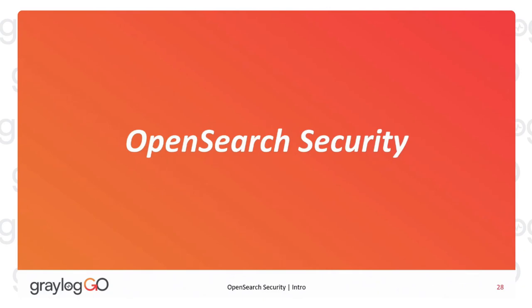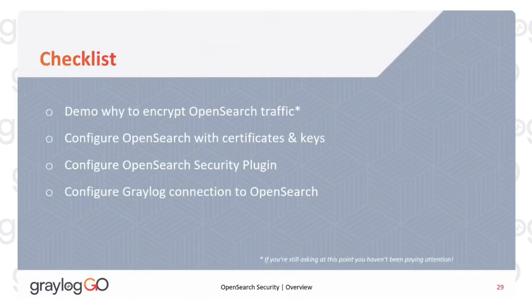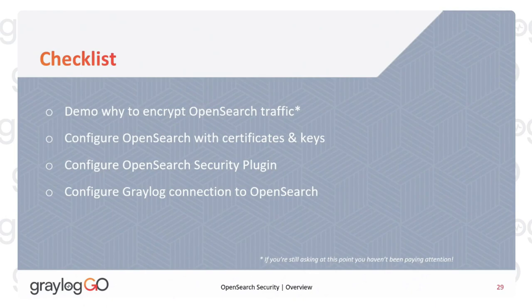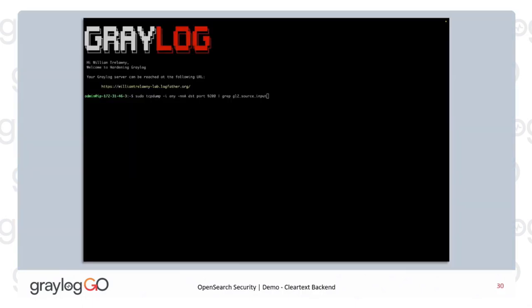The final leg of securing Graylog is securing the OpenSearch backend. OpenSearch conveniently ships for free with the OpenSearch security plugin, which we will heavily utilize. First, to demo why we need to encrypt — you're still asking, you haven't been paying attention. Then we do the OpenSearch configuration: tell OpenSearch to use the security plugin, and then configure the security plugin with encryption and authentication.